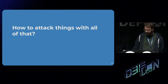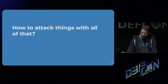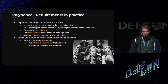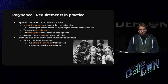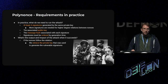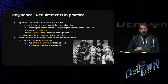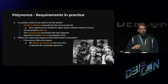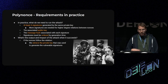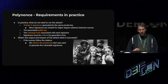So with all of that, how can we actually attack things in practice? To run the Polynonce attack, what you will need is at least four signatures — but that's for the linear case. If you want to target a higher degree relation, then you'll need more than four signatures. In any case, you'll need to make sure that these signatures are sorted by the time in which they were generated. On top of that, you'll need the message and the public key associated with each signature. If you have all of that and the nonces were indeed generated in a biased way, then you can retrieve the private key.